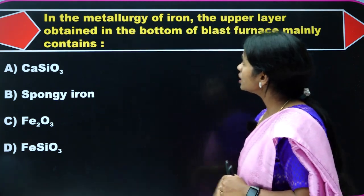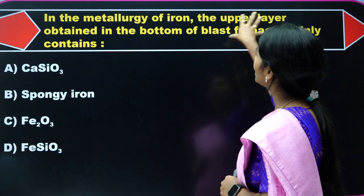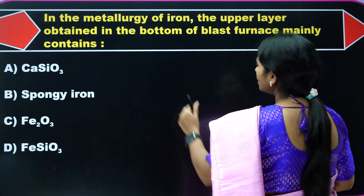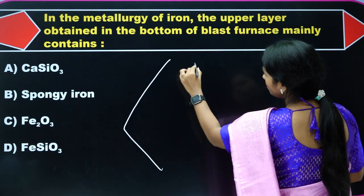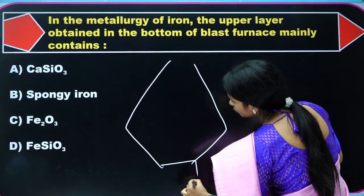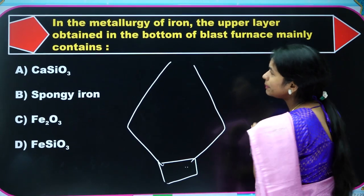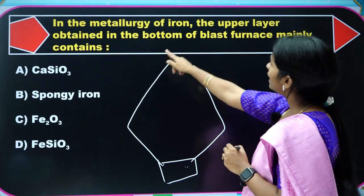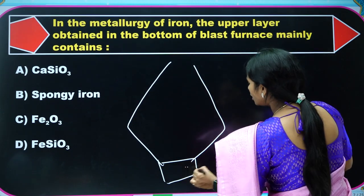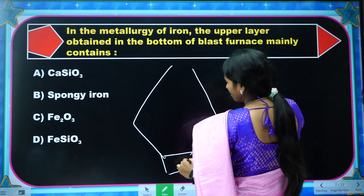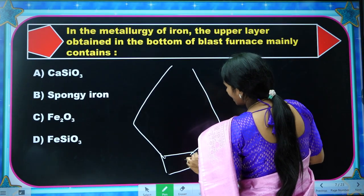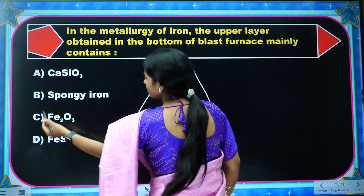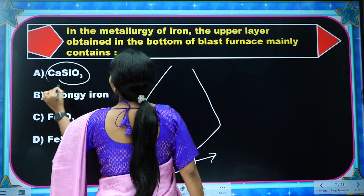Question: In the metallurgy of iron, the upper layer obtained at the bottom of the blast furnace — what did we get at the bottom of the blast furnace? Finally, we got pig iron. At the bottom we got pig iron, and on top of the pig iron, what did we get?